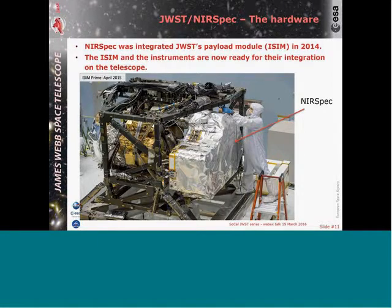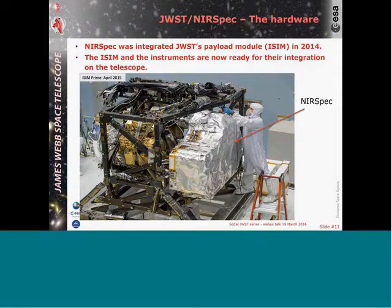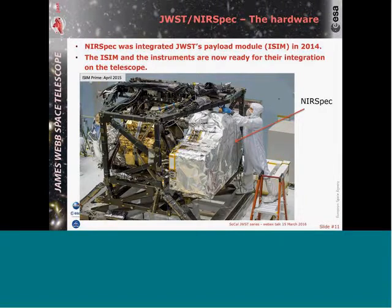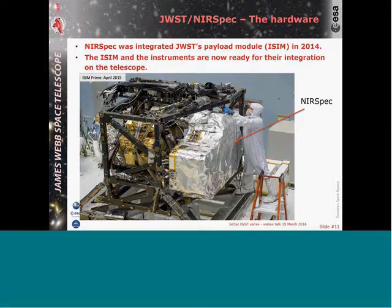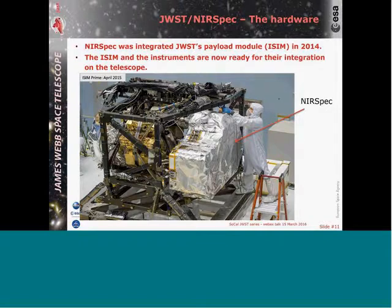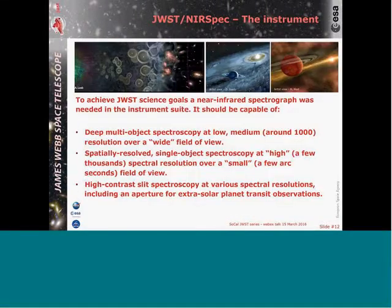The next picture is from last year, before the final test campaigns of the payload module. The payload module for JWST is called ISIM and contains the four instruments. With the red arrow, you have NIRSpec. In the middle, the other instrument is NIRCAM, which has two modules. On the right, covered with silver-type MLI, is MIRI — the mid-infrared instrument. The other instruments are hidden behind NIRCAM. This was another big milestone when all these instruments were integrated there.